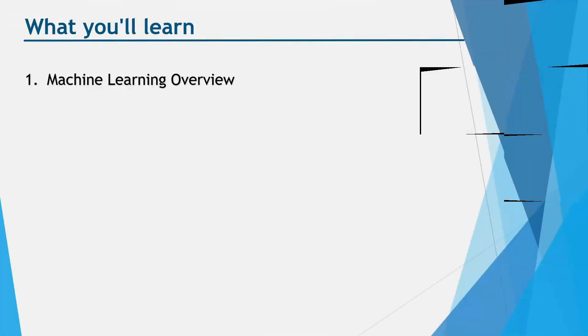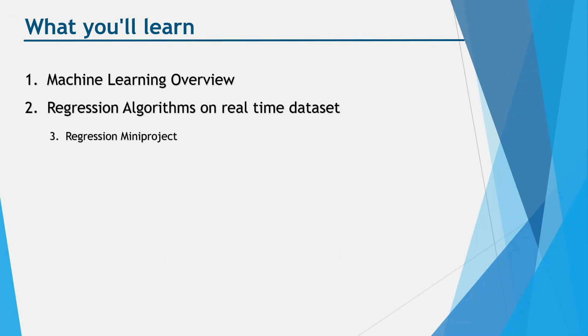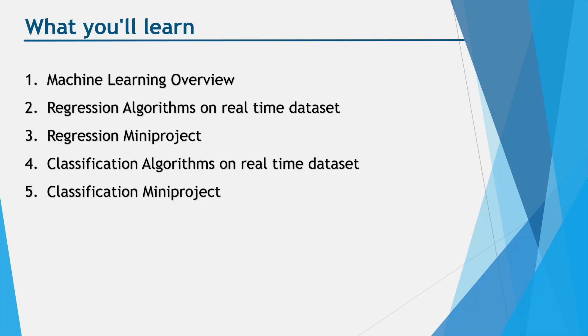Moving forward, what will you learn in this event? First, you'll learn machine learning overview. Then we'll move to regression algorithms, and after completing regression, we'll cover a regression mini project. Then we'll move to classification algorithms—different algorithms—then a classification mini project.